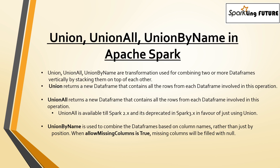Union all is the same as union, which is why it is deprecated in Spark 3.x — the rest of its functionality is identical to union. Union by name is also used for combining two or more data frames, but it combines based on column names rather than just position. There is also an option for adding missing columns when using union by name. Let's see this with an example.